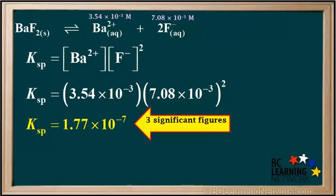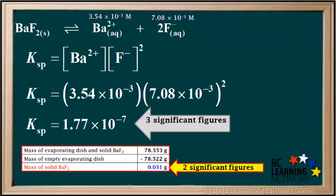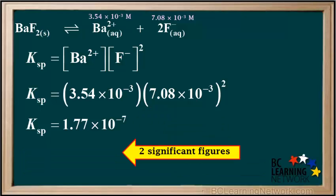Note that this value has three significant figures. Recall that earlier we subtracted 78.522 from 78.553. The rule for subtraction is to express the answer to the lowest number of decimal places in the numbers being subtracted — in this case, three decimal places. The resulting number, 0.031, has three decimal places but only two significant figures, since leading zeros are not significant. So our Ksp value must be rounded to two significant figures: 1.8 × 10⁻⁷.